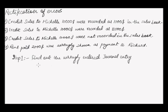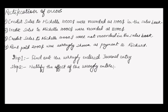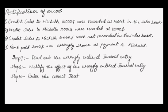The second step is to nullify the effect of the wrongly entered journal entry, and the last step is to enter the correct journal entry. Now we'll understand it with the help of one example.